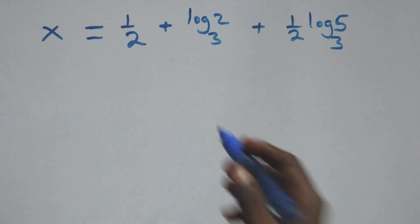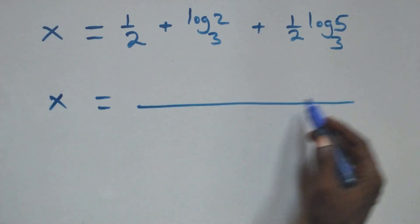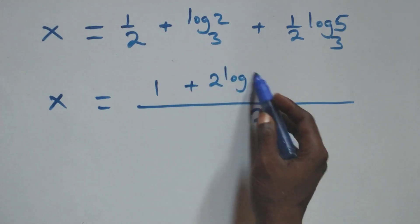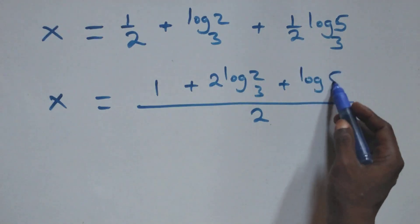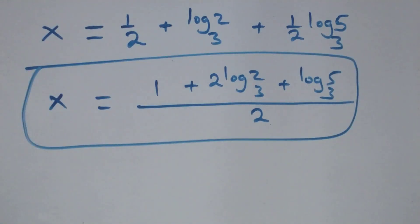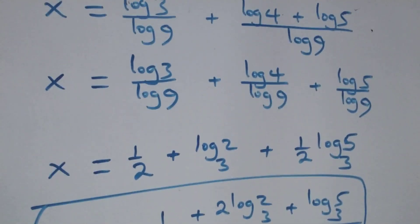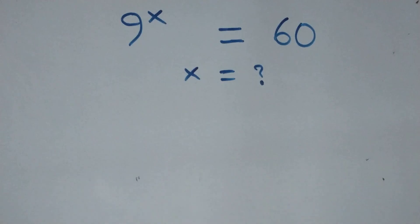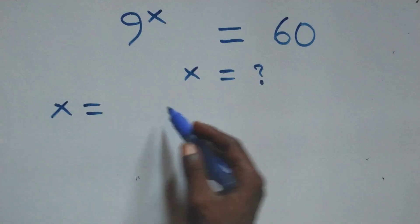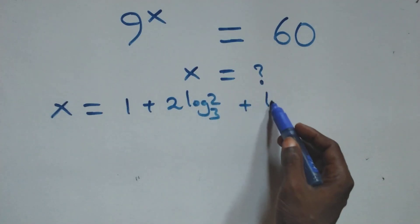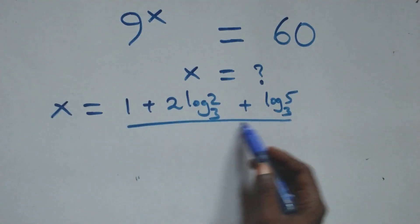Let's bring this together as one fraction. We have x equals (1 + 2·log₃2 + log₃5) all over 2.